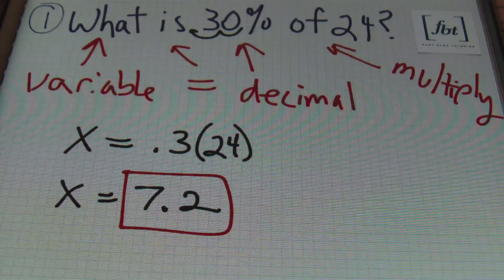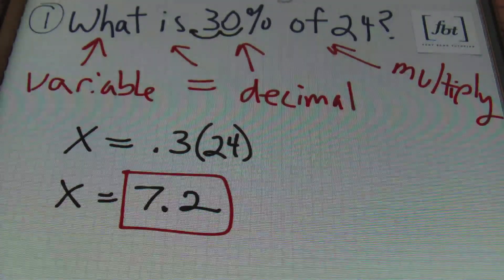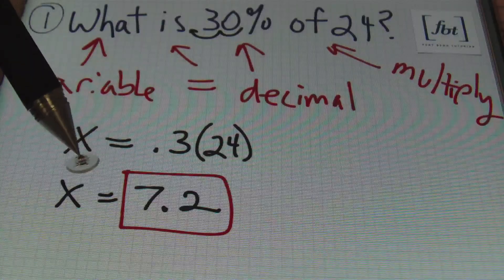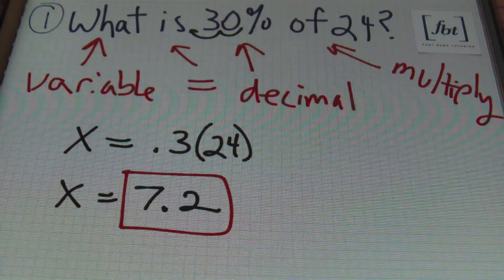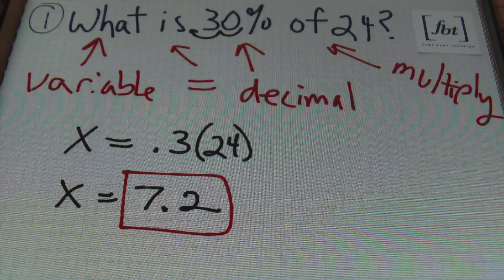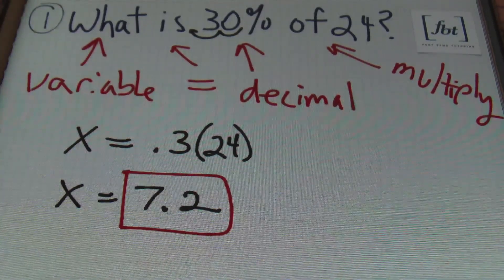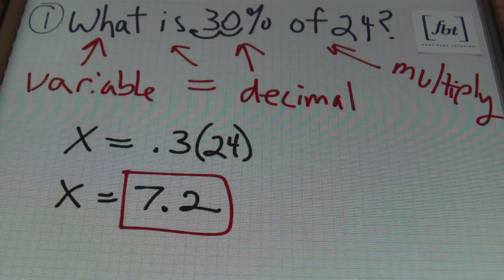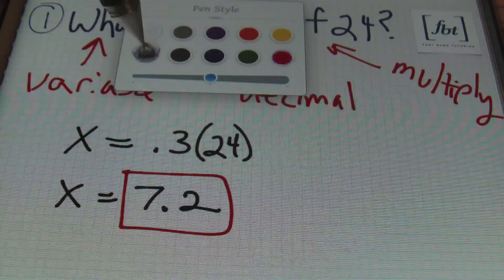You can always plug your answer back into the original problem to see if it makes sense. It says what is 30% of 24, and so 30% of 24 being 7.2 sounds about right. How do I know? I know that 10% of 24 is 2.4, and 3 times 2.4 is going to give me 7.2. That's using algebraic translation.